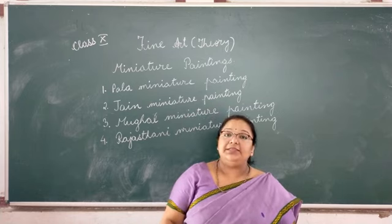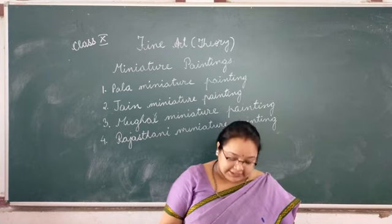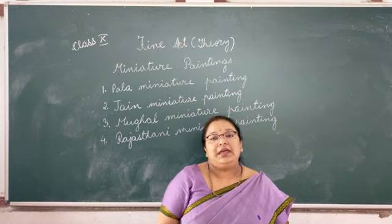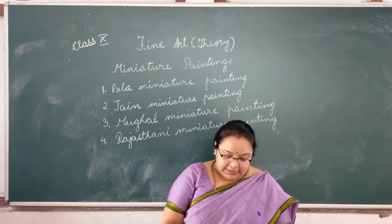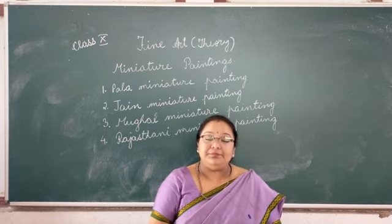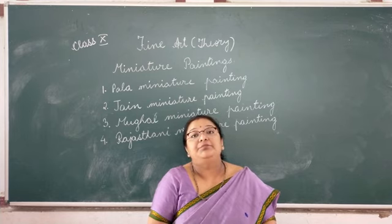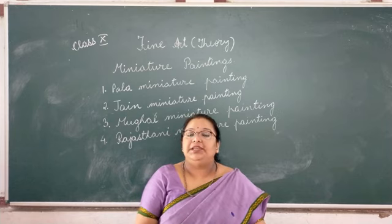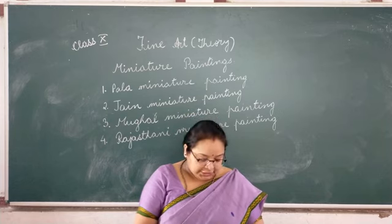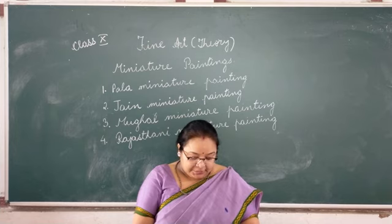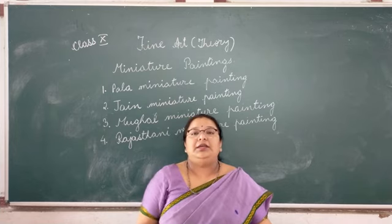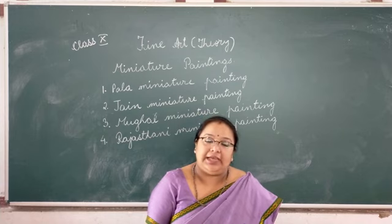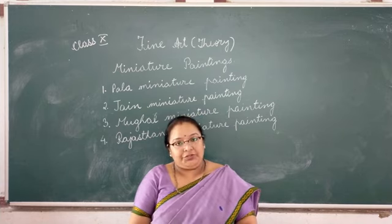Portraits of ruling kings and queens, maritime scenes, and scenes from epics like the Mahabharata were also painted. The colours used in Rajasthani miniature paintings were bright, and they used gold, silver, and precious stones, which is very characteristic of this style. The themes were also taken from devotional songs and romantic poetry.